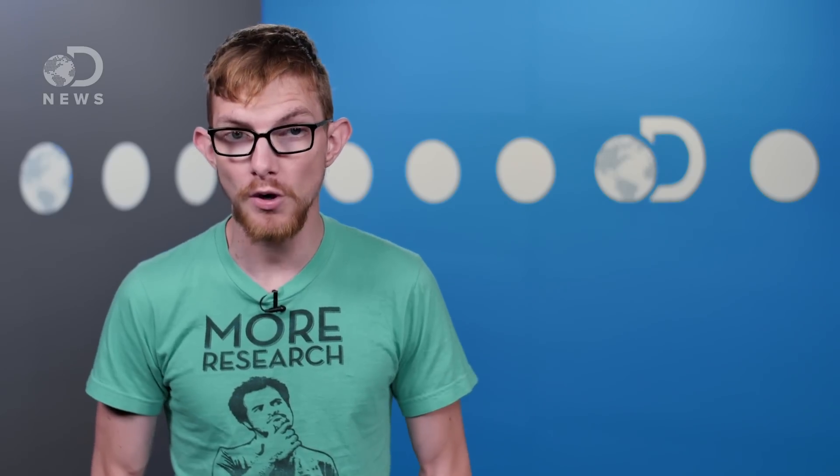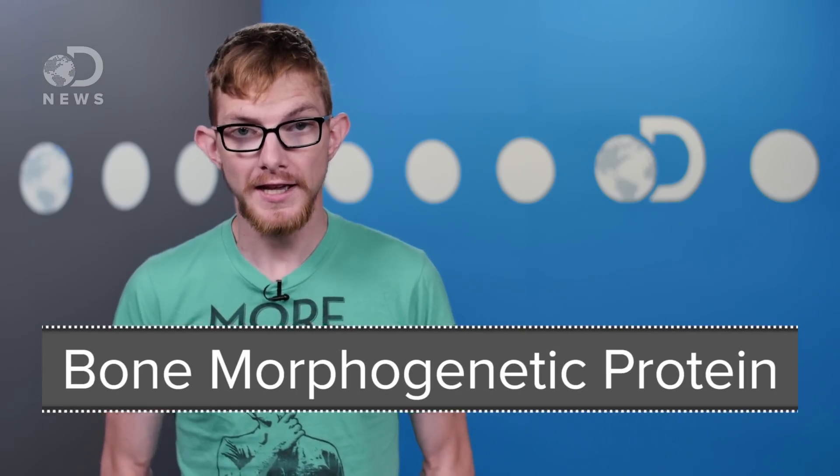In fact, their creator Shinya Yamanaka isn't resting on his Nobel laurels. Using a protein called BMP or bone morphogenetic protein, he discovered a way to turn adult cells into stem cells more frequently. This can increase the supply and further accelerate and diversify the research.